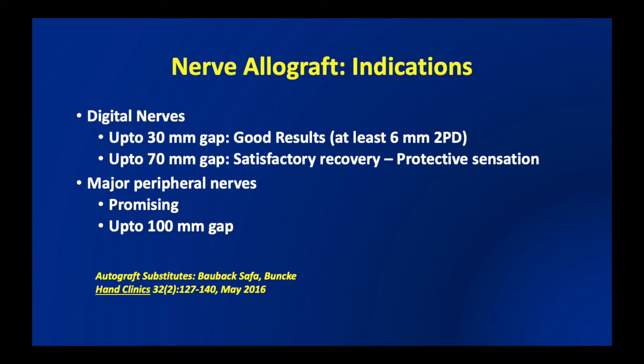Acellular allografts can be used for digital nerve reconstruction with up to about a three-centimeter gap for good results, or up to a seven-centimeter gap for satisfactory results. In major peripheral nerve reconstruction, results are promising with gaps up to one hundred millimeters.